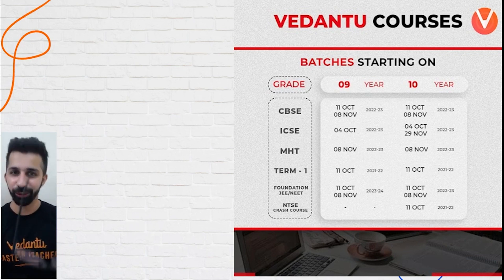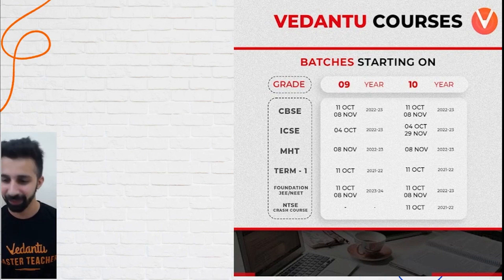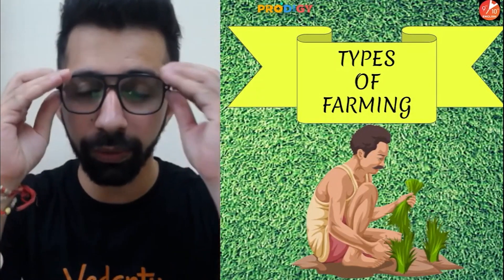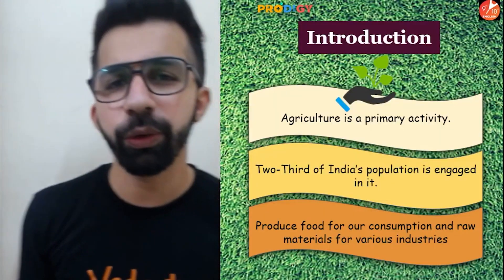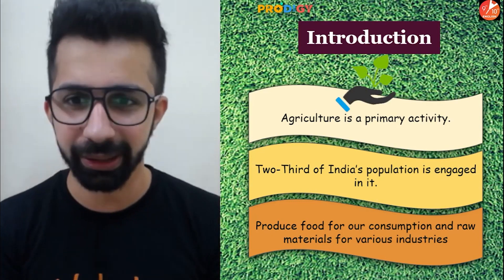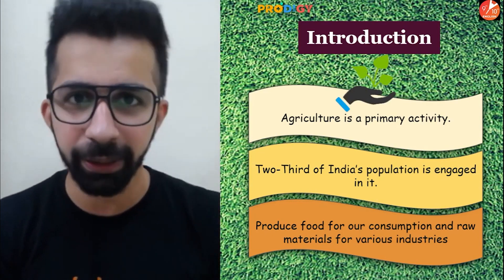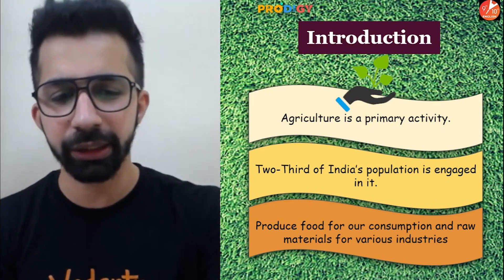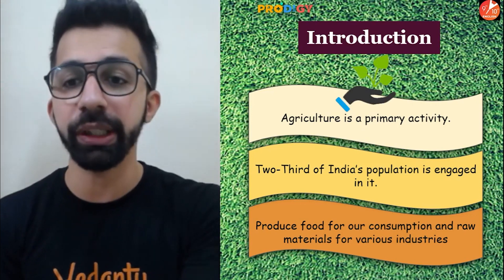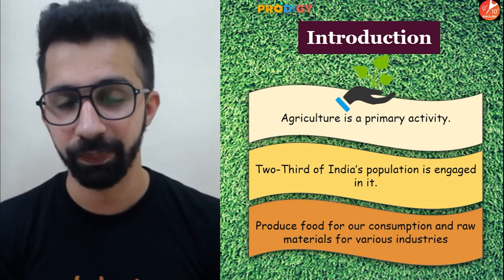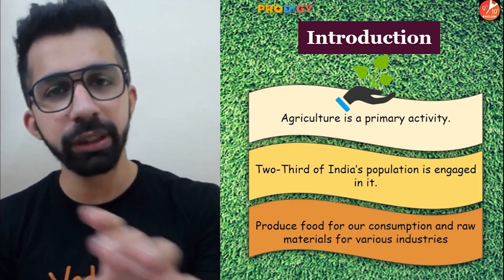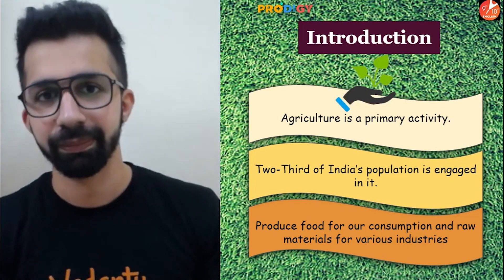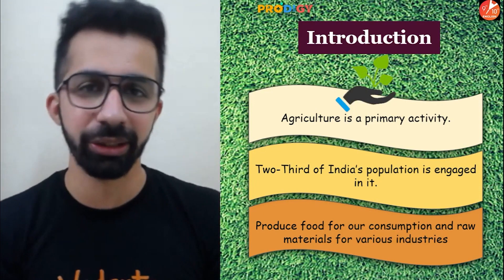Now let's get started with the session: Types of Farming. Before understanding the types of farming, let's understand some basics. Agriculture is a primary activity. In India, two-thirds of the population is engaged in agricultural activities. It produces food for our consumption and raw materials for many agro-based industries.